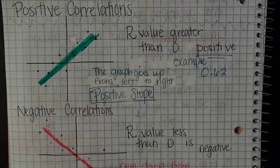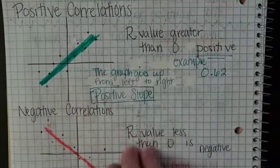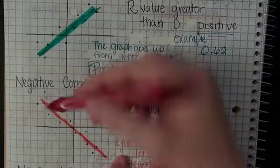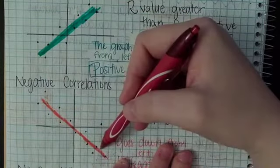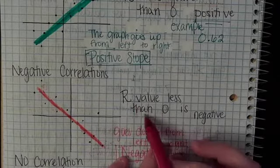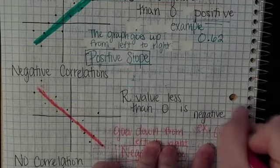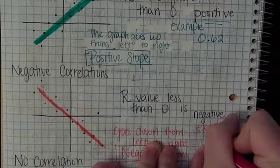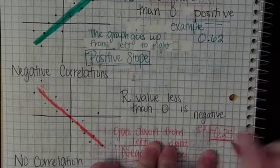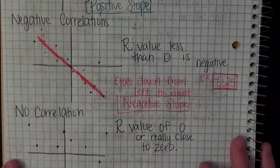It's not exactly linear. It has a tendency or a correlation but it's not exactly linear. So it's a negative correlation when that R value is less than zero or is negative. An example would be negative 0.25, a negative correlation.